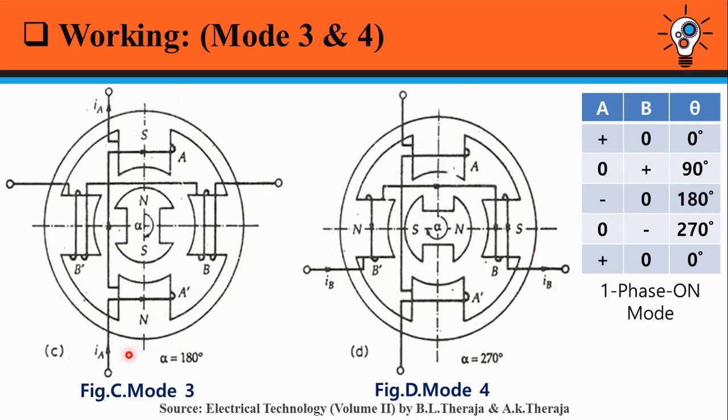That is, IA current flows from A' towards A. Therefore, north and south poles are formed on the stator and the south pole of the rotor gets attracted towards the north stator pole and rotor moves further 90 degrees. Therefore, the total mechanical displacement is 180 degrees.